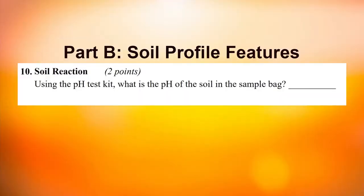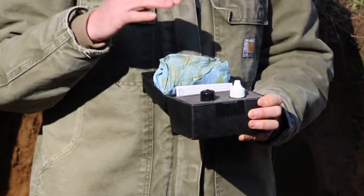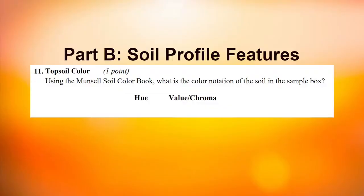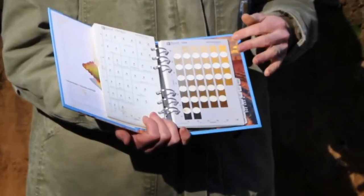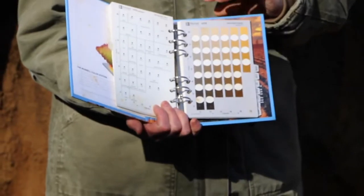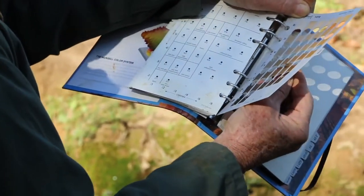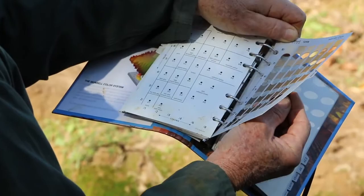Question ten is soil reaction — you're going to be measuring pH. There is a video that will show you how to use the test kit. Question eleven is topsoil color, where you'll make a more precise determination using the Munsell color book. There is another video available showing how to use the Munsell color book for this question.